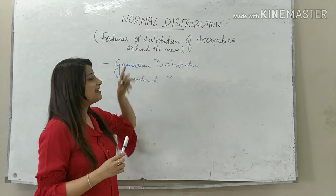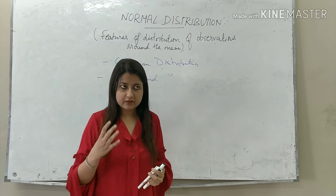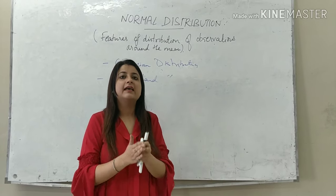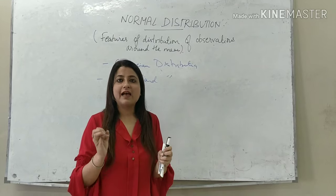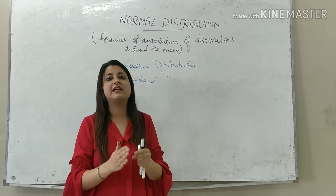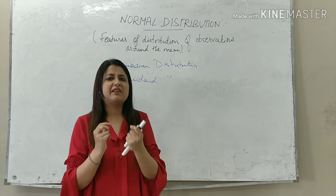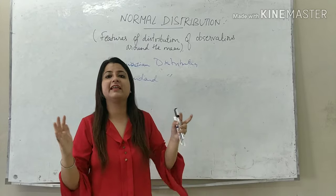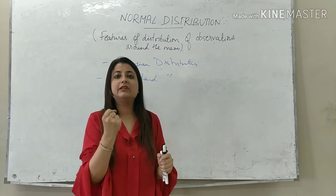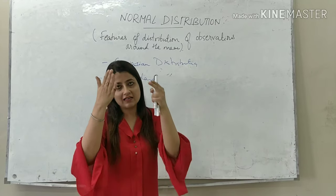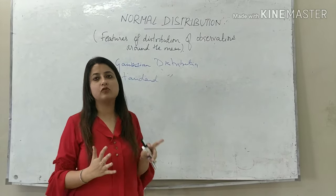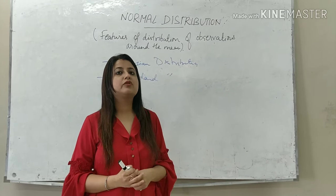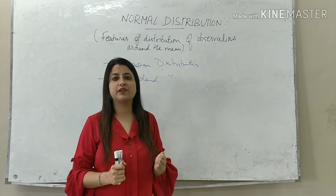Why is it called Normal? In a Normal Distribution, it is so called because for a set of data, most of the values or observations are clustered around the mean value, and only relatively fewer values deviate on the extremes on either side. So the normal thing is that most values cluster around the central value — hence it is known as Normal Distribution.